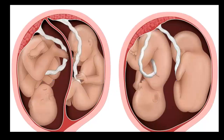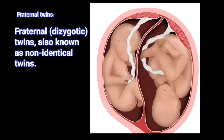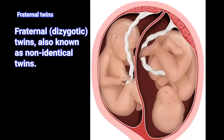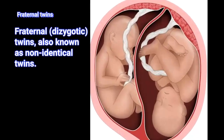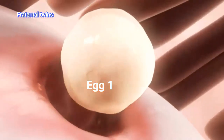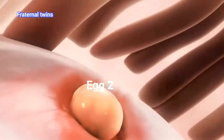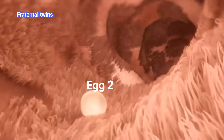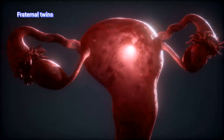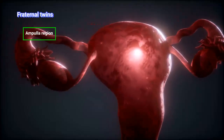Let us start with fraternal twins, which are known as dizygotic or non-identical twins. This occurs when a woman's ovaries release two eggs. Egg one comes out from the ovary and moves into the fallopian tube, and egg two is released from the ovary and enters the fallopian tube. Both eggs make their way to the ampulla region inside the fallopian tube — roughly this area.